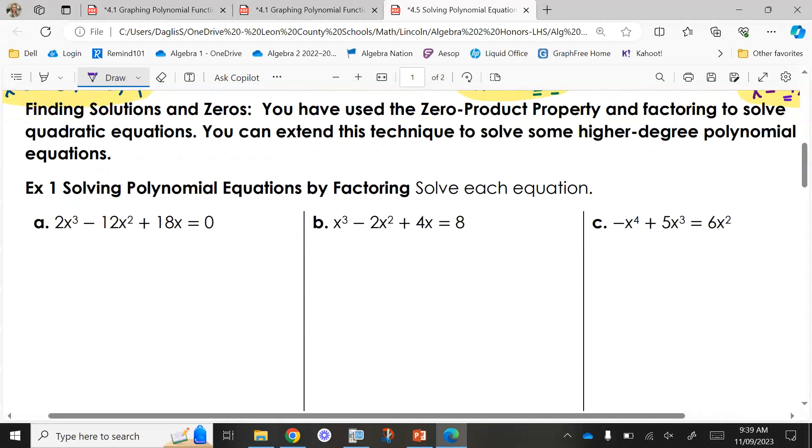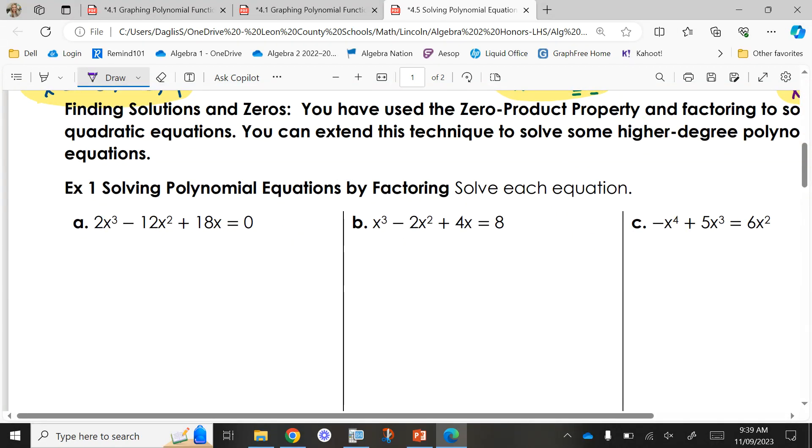So our first example, if I had given this to you yesterday and said factor completely, what would you look for first? Greatest common factor. Do I have one? Yes. What is it? 2x. That leaves me with x² - 6x + 9. The difference today is now we're equal to zero, showing we're going to have to actually find what my x value is. Am I done factoring? No. x² - 6x + 9. Multiplies to give you 9, adds to give you negative 6. x - 3, x - 3.